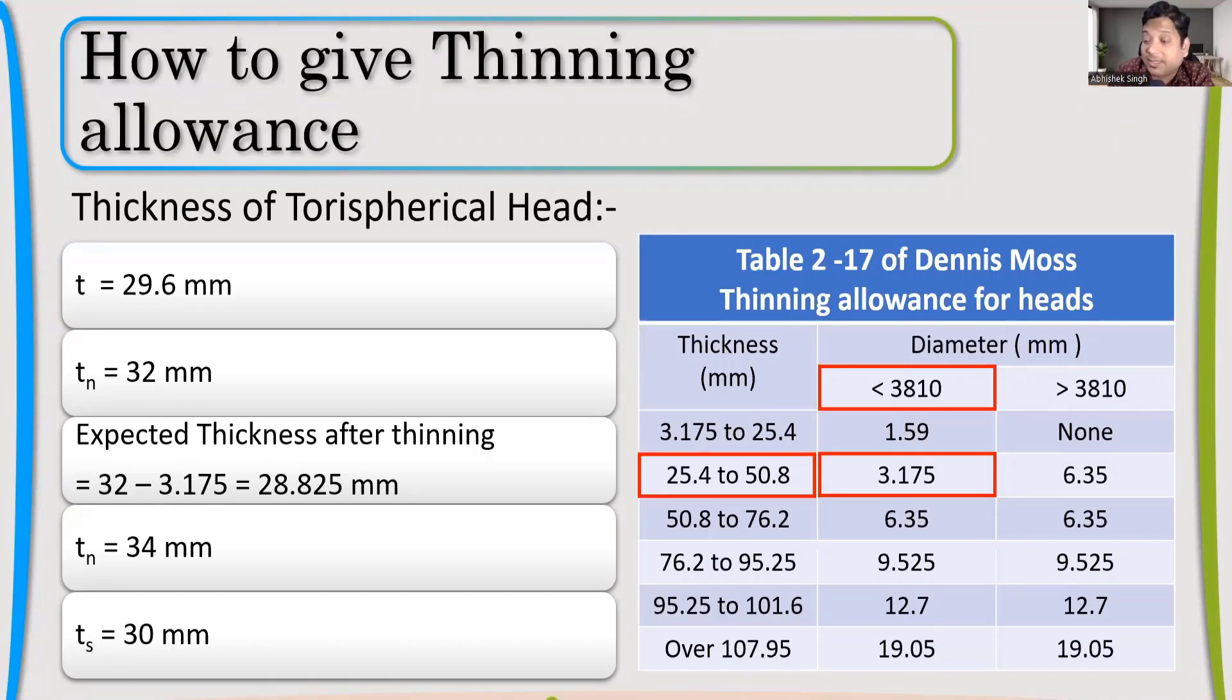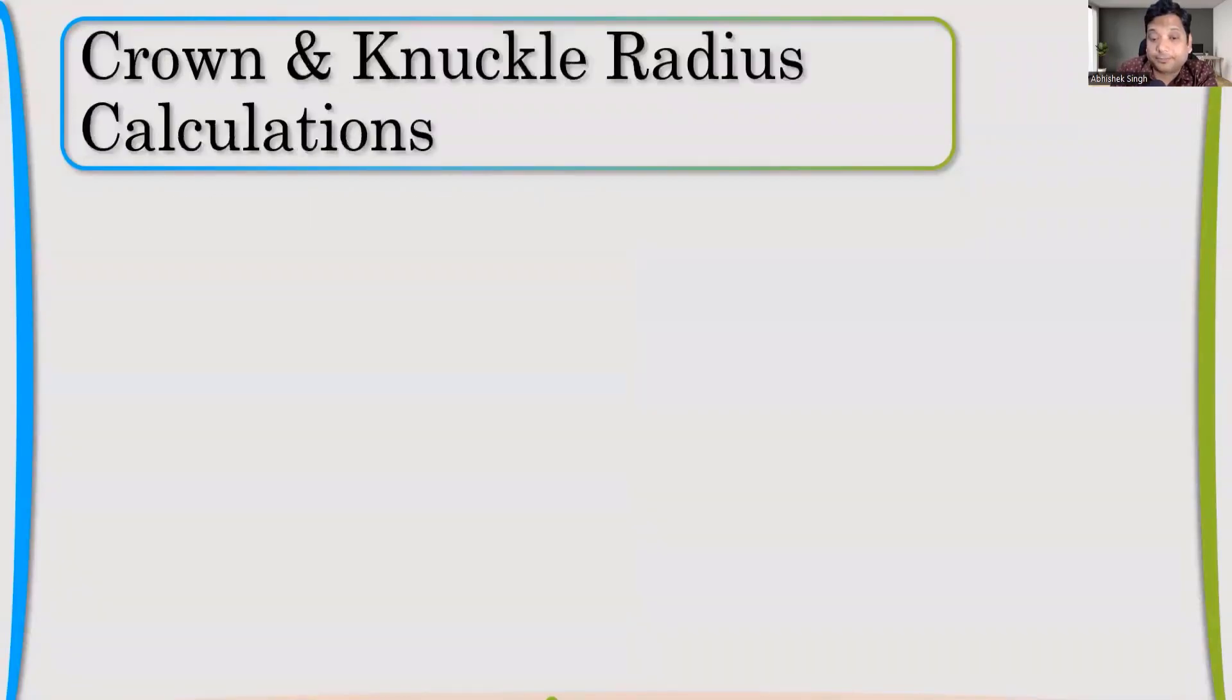So 30 mm I will give as a minimum that will be mentioned in the drawing. Don't forget to mention the minimum thickness in the drawing because if the fabricator is not able to achieve this minimum thickness starting with 34 mm nominal, you will not be responsible because you have given the 30 mm. As the thinning depends upon the fabricator, if he is not skilled or has not done it regularly, he may end up providing lots of thinning. In that case, you will be safe because you have given that your minimum thickness should not go below 30. So inspection will happen on that and it will be rejected if that thickness is not met.